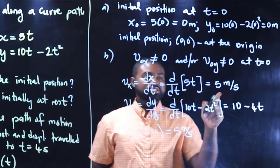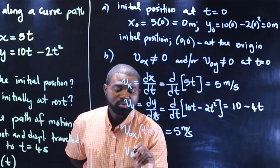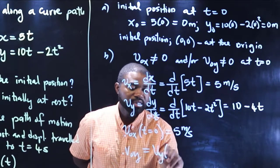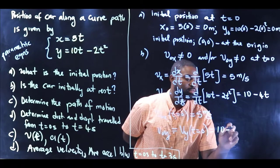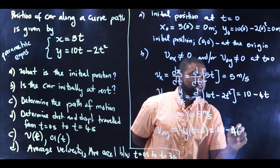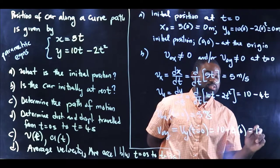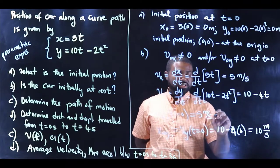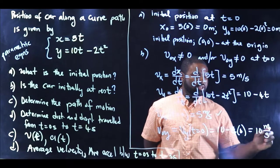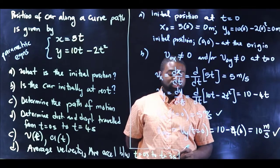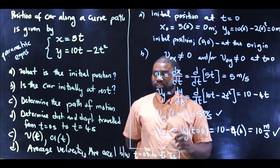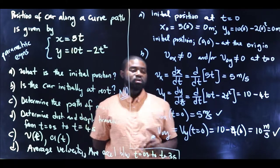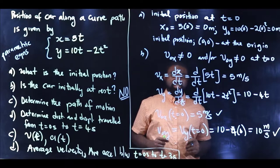Because the initial velocity in the x direction remains constant, voy, which is vy at t equal to 0, will be 10 minus 4 multiplied by 0, which is 10 meters per second. So the initial velocity in the x direction is 5 meters per second and in the y direction is 10 meters per second. This means that the particle is not initially at rest — the answer is no.